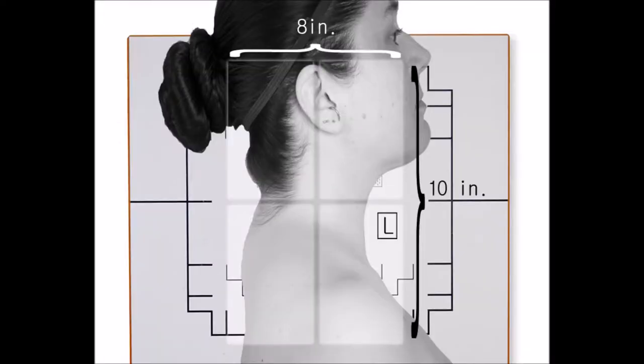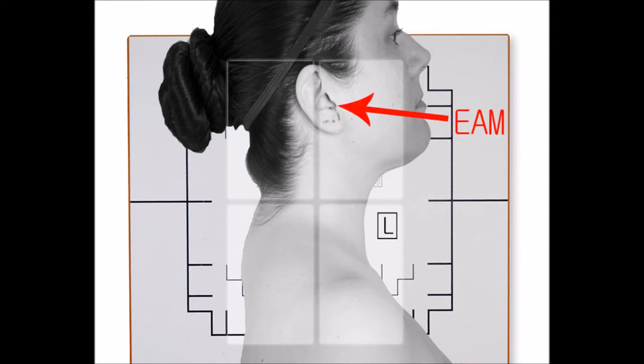Use an 8x10 lengthwise cassette. A grid is optional because of the air gap. Collimate to include 1-2 inches above the EAM or external audiometis, the soft tissue margins of the neck, and the first two or three thoracic vertebrae. Expose after full expiration for maximum shoulder depression.